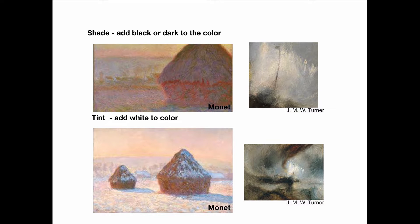Here are some simple examples. When you add white, you get an effect like Monet in the top, where you're adding white. And at the bottom, where you're adding white to your painting and your colors. And this is the result you get — you get tints.